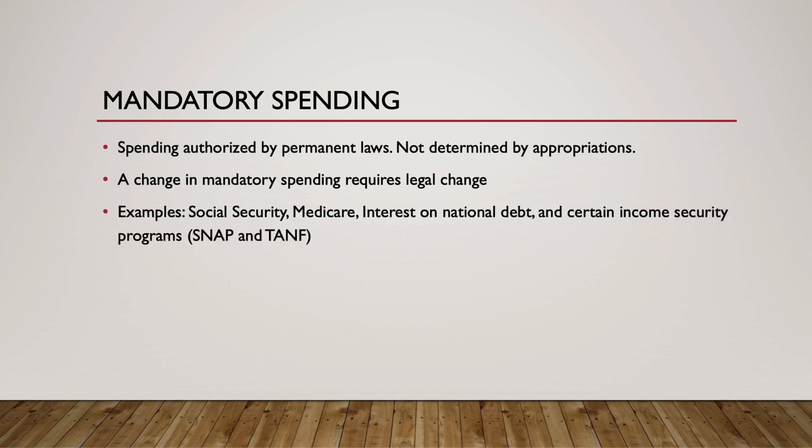Examples of mandatory spending include spending on Social Security, Medicare, interest on the national debt, and certain income security programs, including SNAP — the Supplemental Nutrition Assistance Program — and TANF, Temporary Assistance to Needy Families.